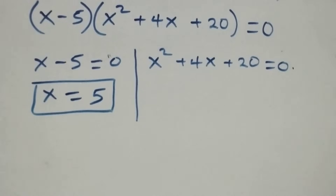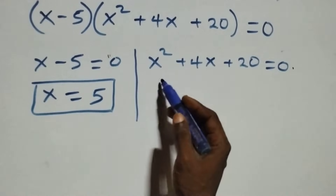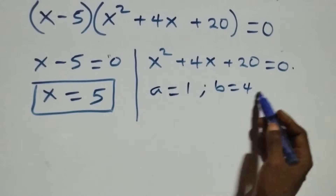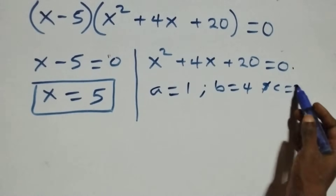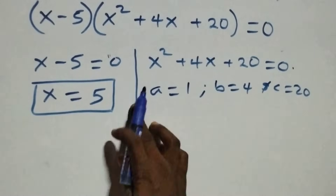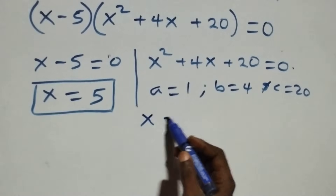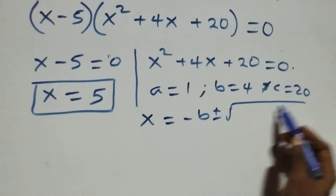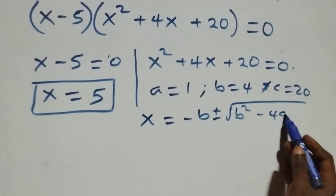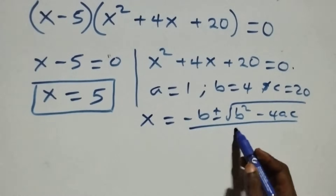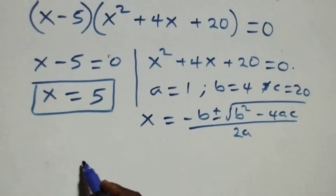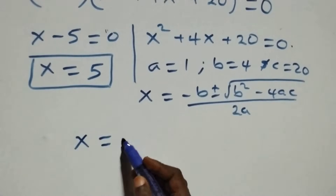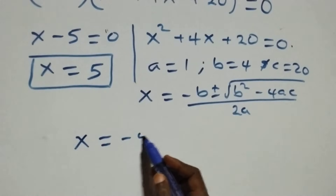Then here we have a quadratic equation: a equals to 1, b equals to 4, and c equals to 20. Applying the quadratic formula, which is x equals to minus b plus or minus square root of b squared minus 4ac, all over 2a. What we have becomes x equals to minus 4 plus or minus square root of 4 squared minus 4 times 1 times 20, all over 2.